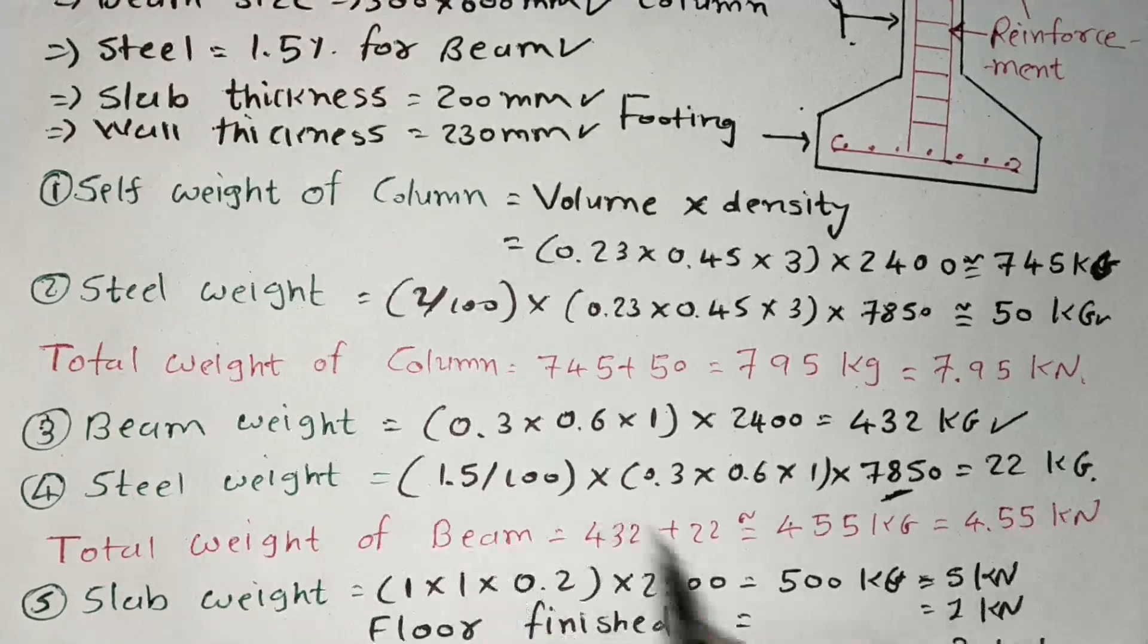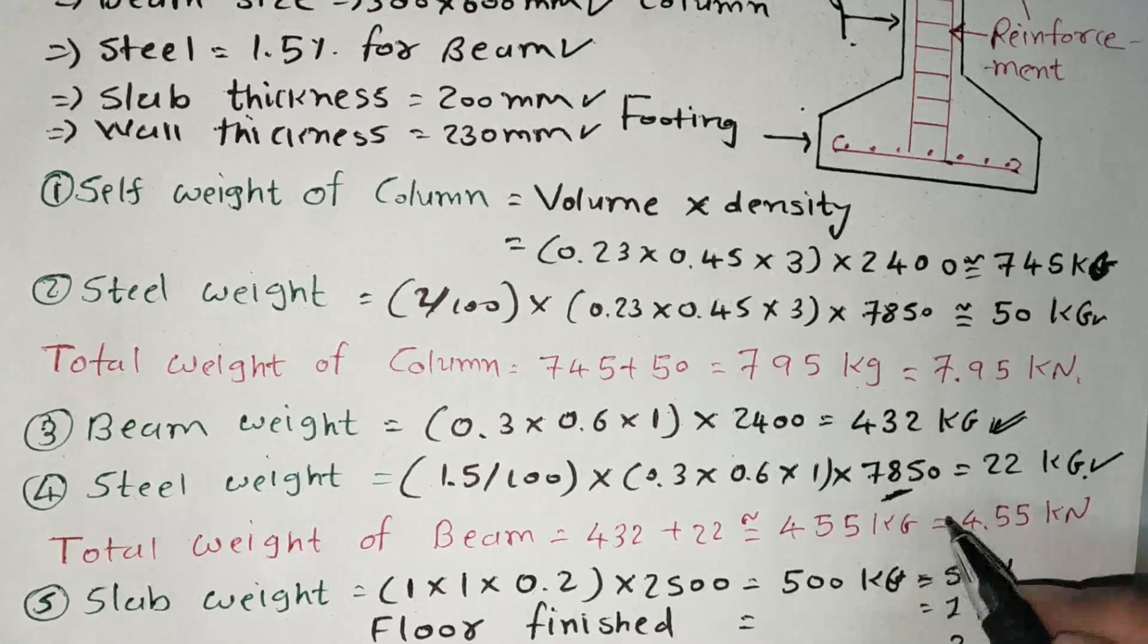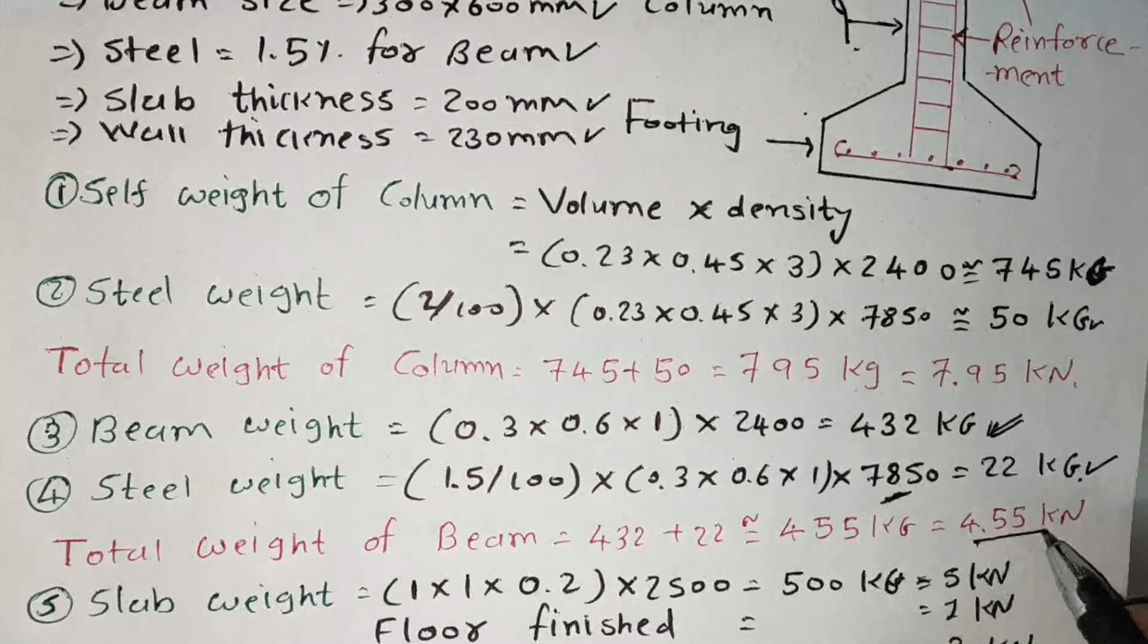I got 22 kg. So total weight of beam including 432 plus 22 kg. So I got 455 kg, almost 4.55 kN.